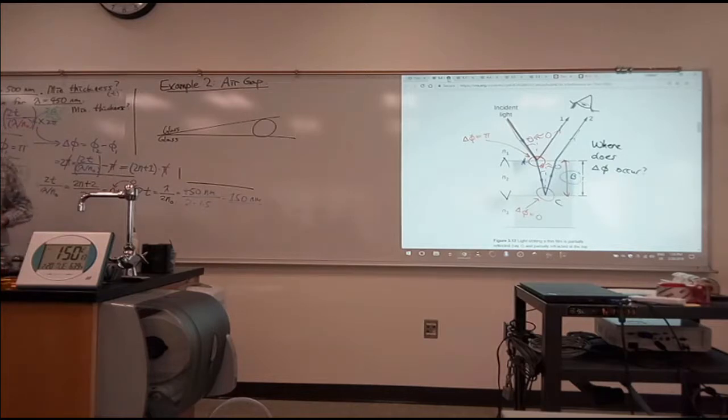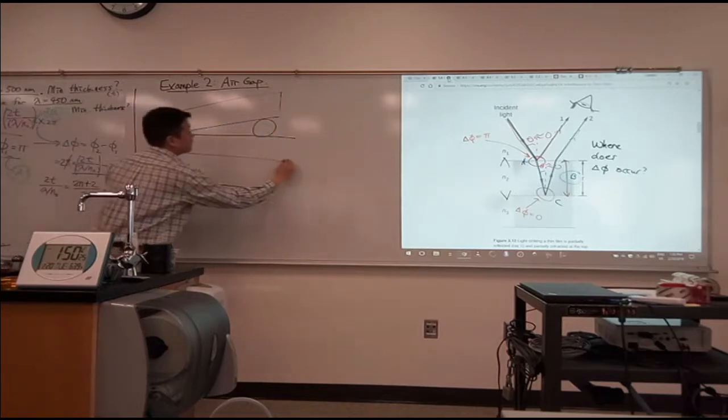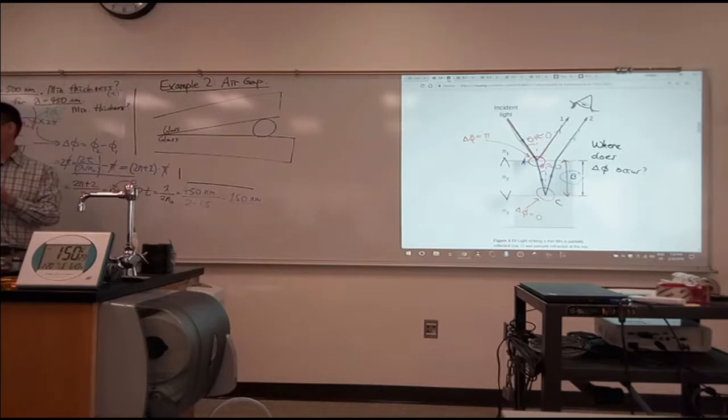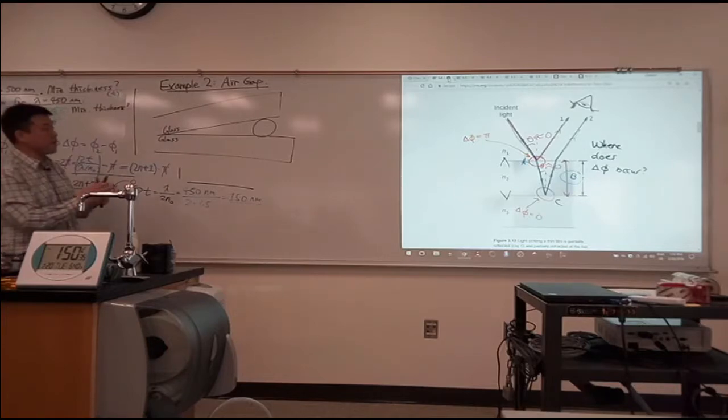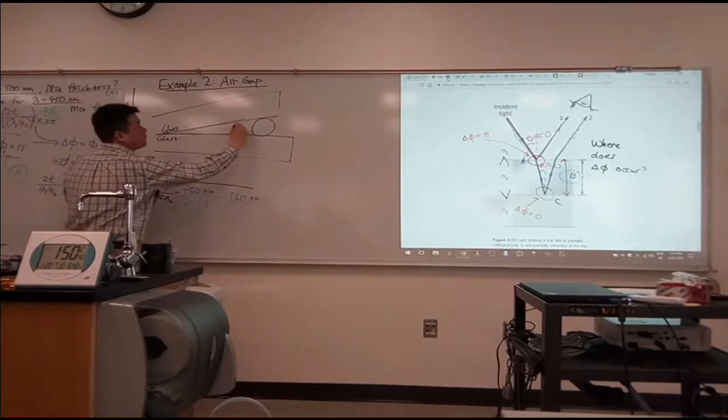So you are looking at some light coming in. The top glass would actually have some thickness, doesn't have to be infinitely thick. So here you have multiple reflections going on, but you could say I think I can ignore all the other surfaces. The only two surfaces I'm paying attention to are these two surfaces that have air between them.